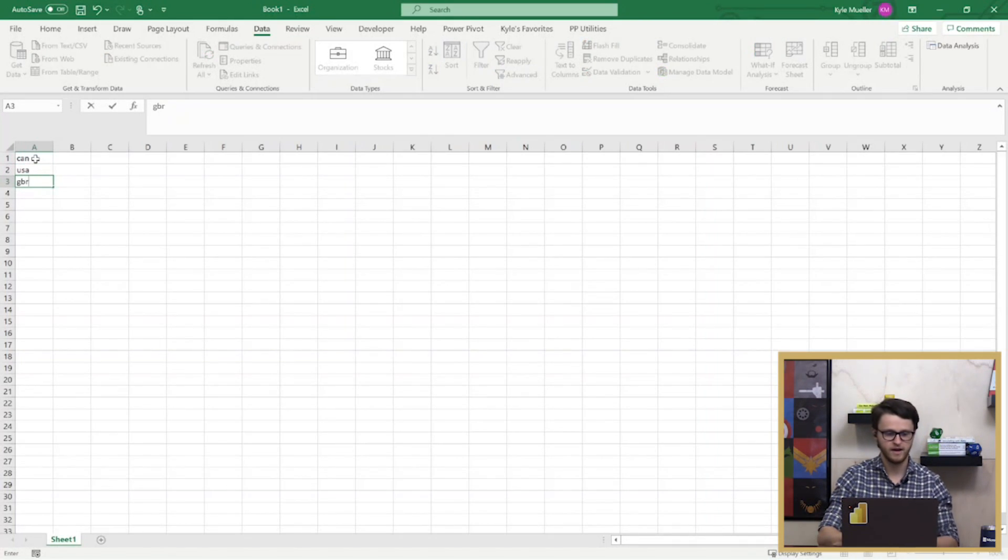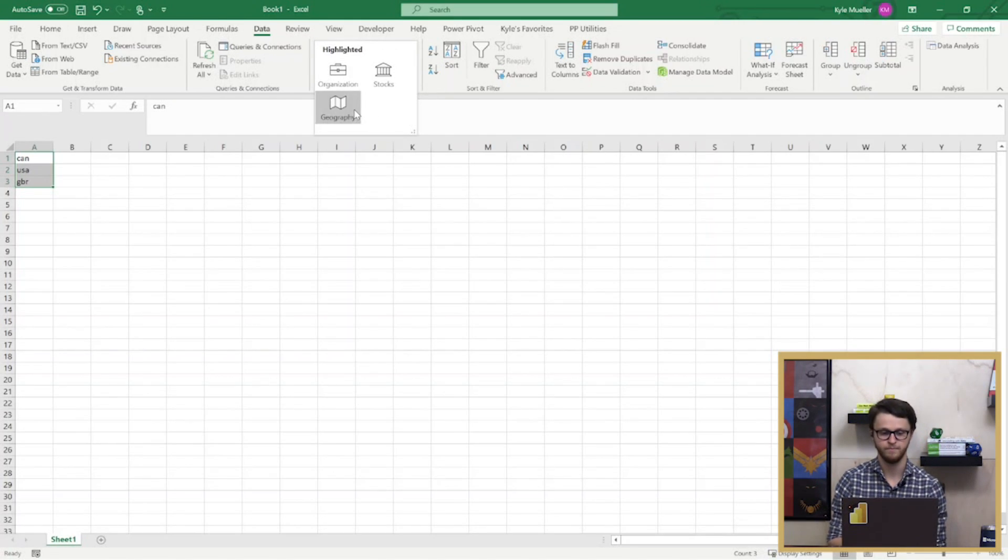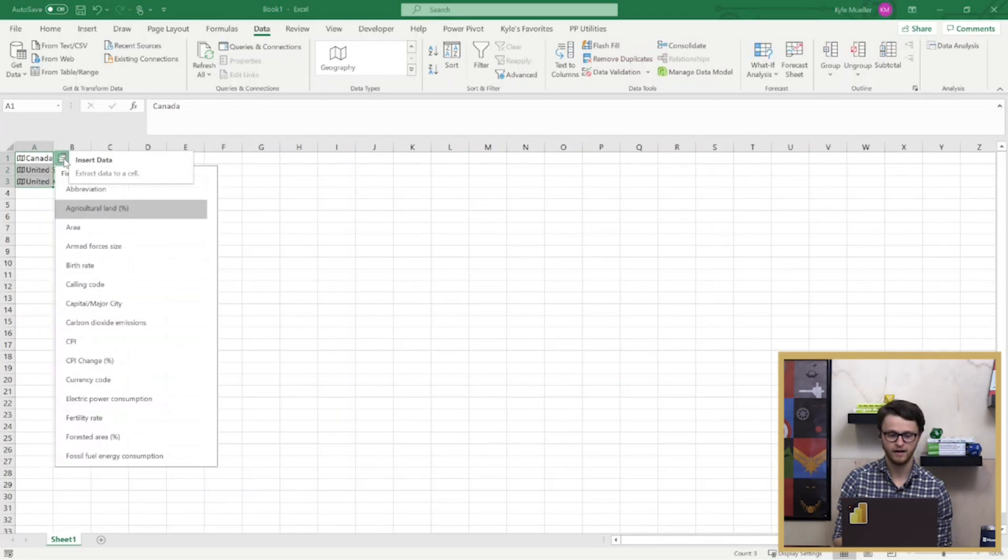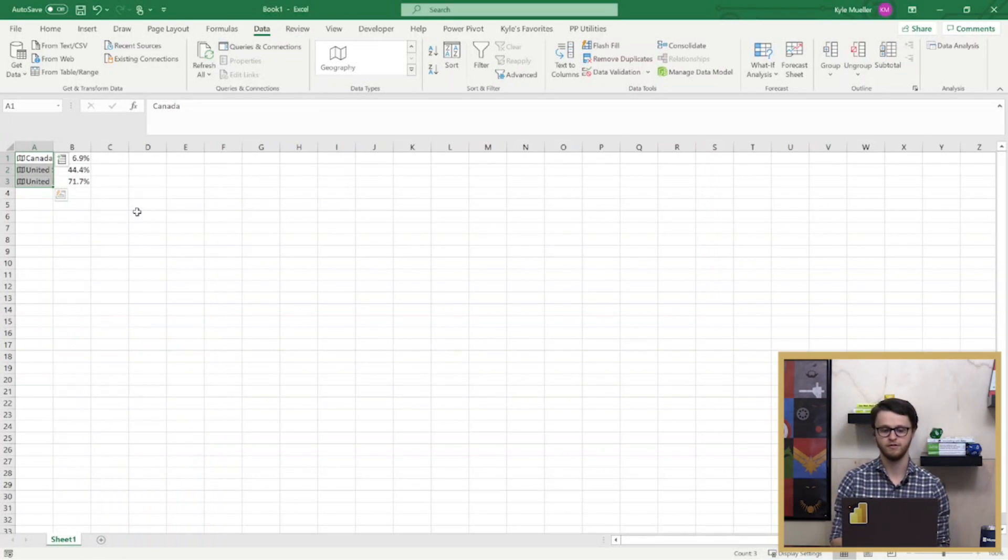So I'm going to use Canada, USA, and Great Britain. By highlighting these cells and navigating to the Data tab on the ribbon, I can find data types and assign these to the data type of geography. Within a single click, I now have all kinds of great information that's been related to what I typed manually. And we can see here that I can use the Insert Data dialog to have all kinds of information right at my fingertips that I can add in with a single click.